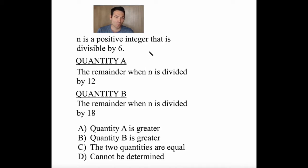As is often the case on quantitative comparison, here what we want to do is test out some numbers. So let's think of some numbers that are divisible by 6. How about 12 and 18? I wonder where I got those from, right? What happens when n is 12? What happens when n is 18?